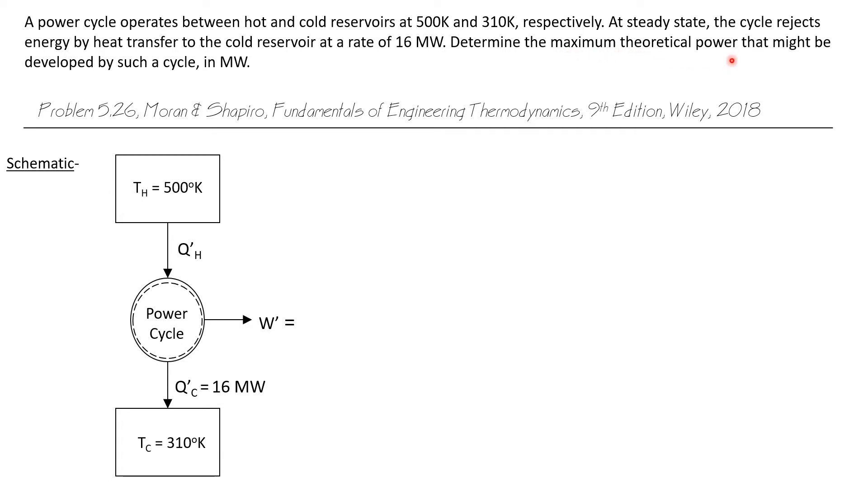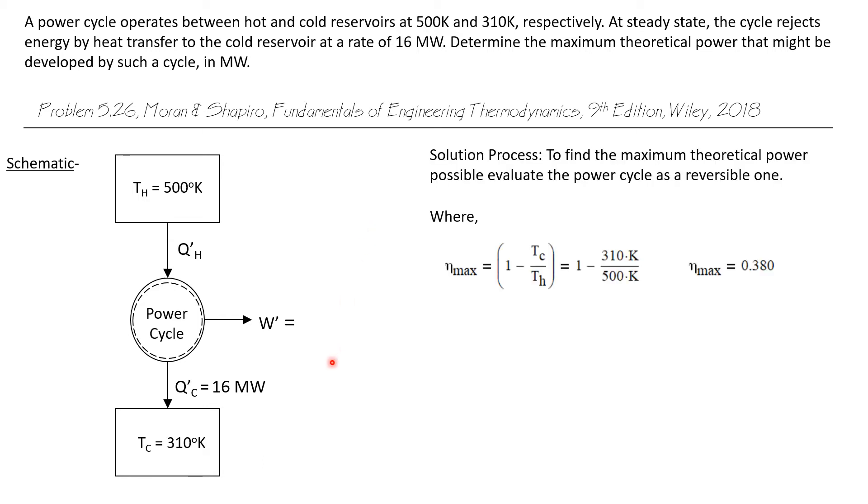Actually we were asked for the maximum theoretical power. Well the maximum theoretical power would come from a reversible cycle. So we'll analyze this as a reversible power cycle to find the maximum theoretical power that might be developed. We know that the maximum efficiency of a power cycle is based solely on the temperatures of the two thermal reservoirs. And that maximum efficiency is 1 minus Tc over Th. We calculate that the maximum theoretical efficiency of a power cycle operating in these conditions is 0.380.